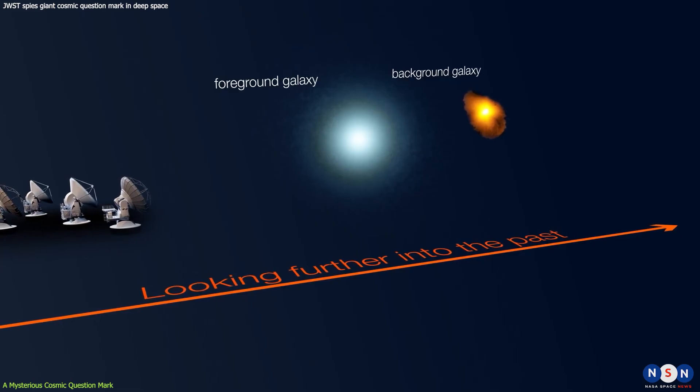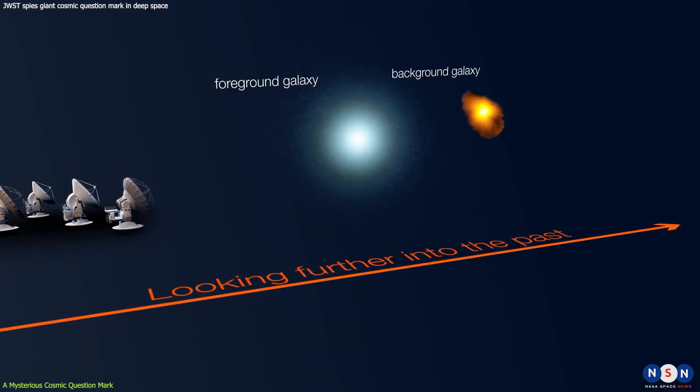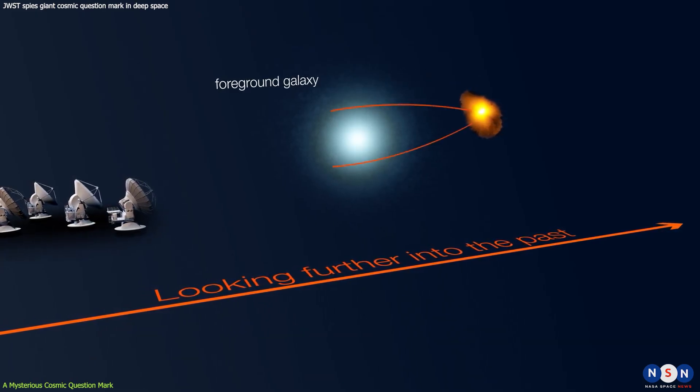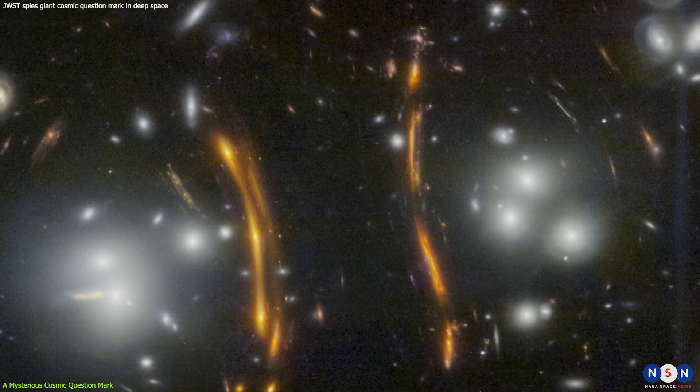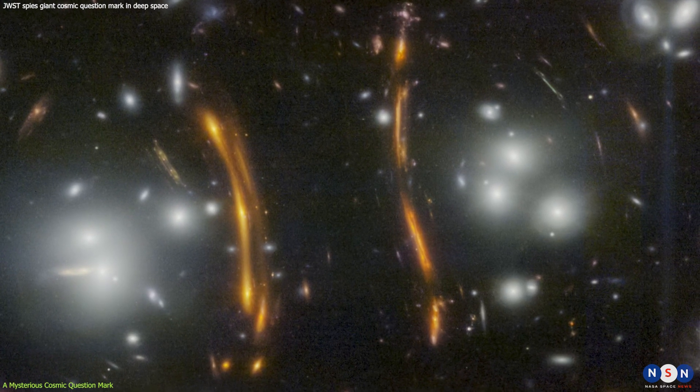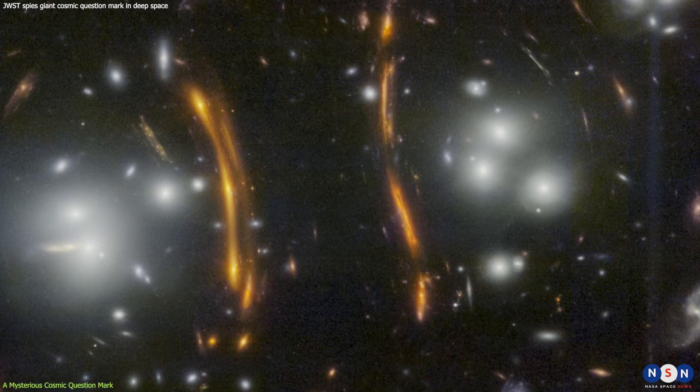One way to study dark matter is to look at how it bends light from distant sources. This phenomenon is called gravitational lensing, and it can create distorted or magnified images of galaxies behind massive objects like galaxy clusters. By measuring how much light is bent, we can estimate how much dark matter is present in the lensing object.